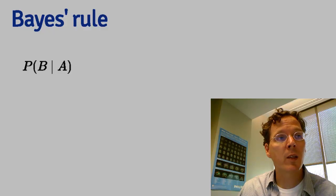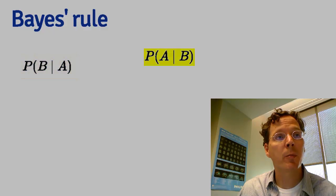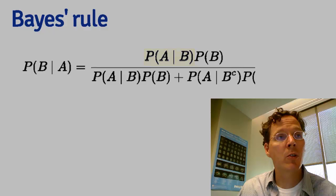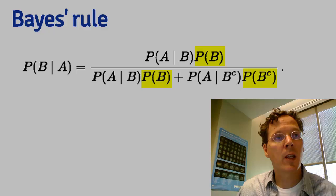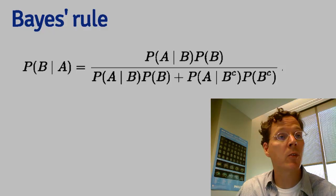So imagine the event that we want the probability of B given A, when we have or can easily calculate the probability of A given B. Bayes' rule says you can do that. You can relate B given A to A given B, but you need some other information. You need the probability of B marginalized over A. This is quite useful in the context of diagnostic tests.